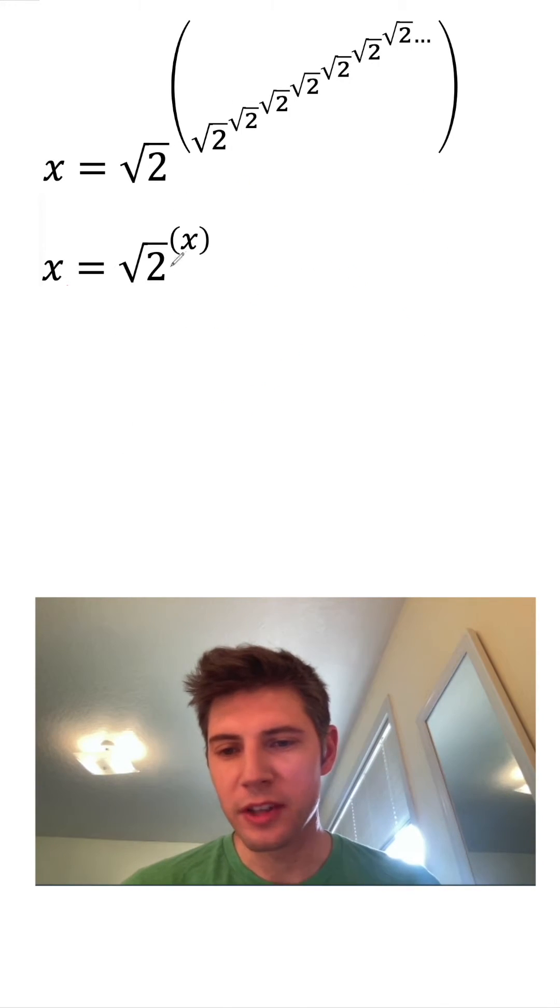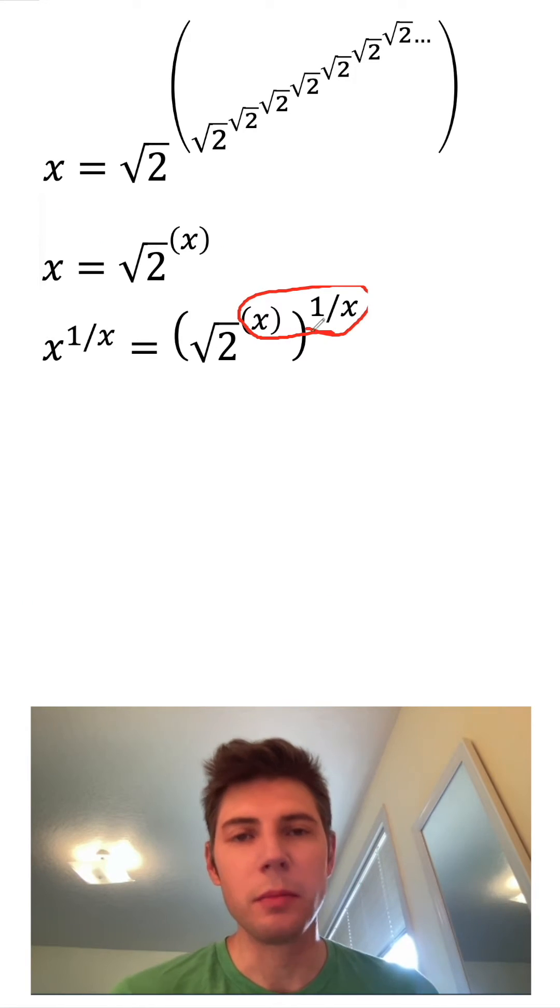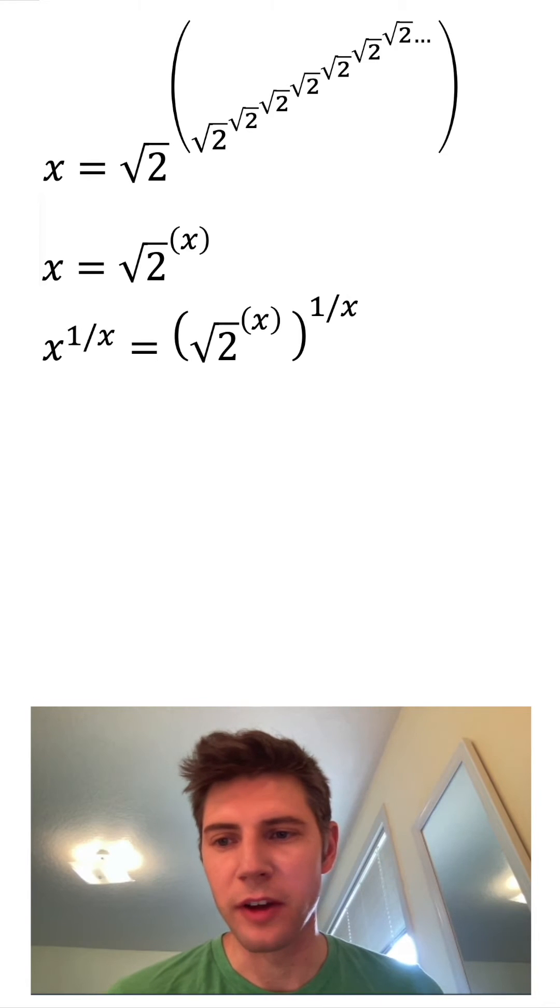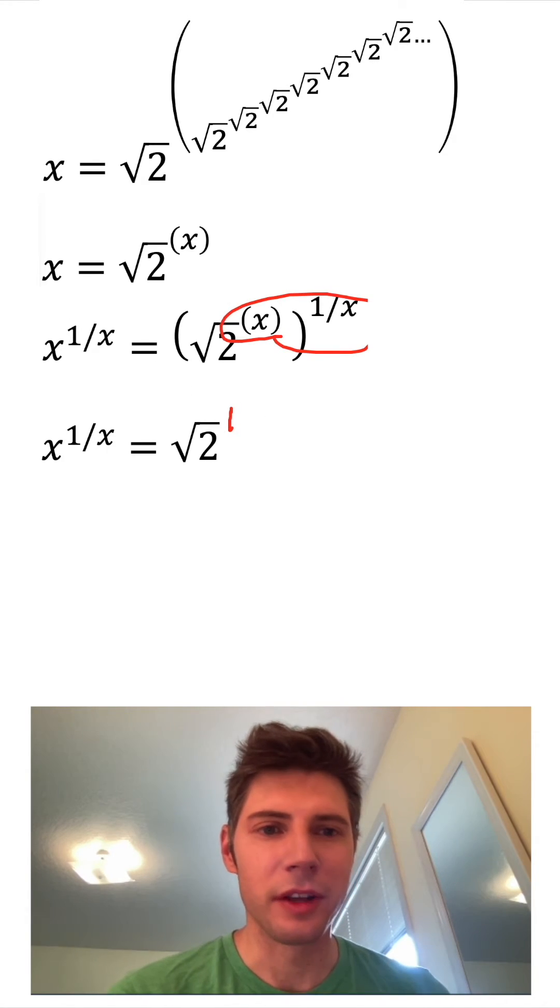Right now, I have an X on both sides. My goal is to get all the X's onto one side. So I'm going to exponentiate both sides to the power of one over X. Now these two exponents need to multiply. So X times one over X is just one. So this is going to simplify into this. These two things cancel. So it's just a one right there.